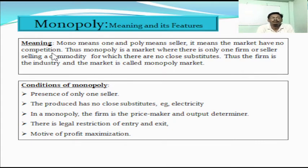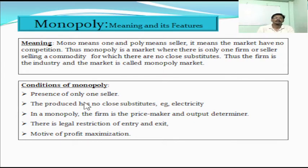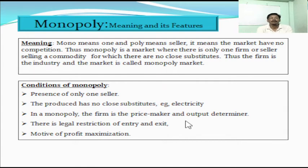As the number of sellers is only one, there is no difference between the concepts of firm and industry — that means the firm and industry are equivalent to one another. The firm has the authority and the right to supply and control the entire market supply. He decides what quantity to be supplied to the market and at what price. That is the reason he is also called the price maker — the monopoly seller is the price maker and output determiner.